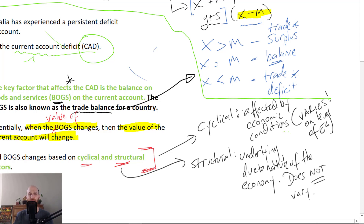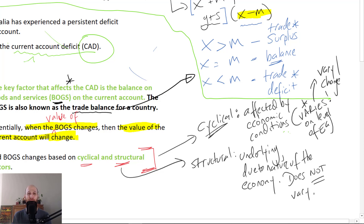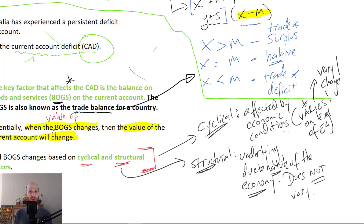Cyclical factors are affected by economic conditions. The impact of these factors varies or changes depending on the level of economic growth, so cyclical factors will be different when growth is high versus when growth is low. Structural factors, however, are underlying factors — they are due to the nature of the economy and they do not vary when economic growth changes. These factors are always consistent. Now let's move into the cyclical factors that affect the balance on goods and services.